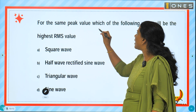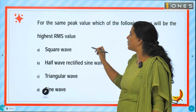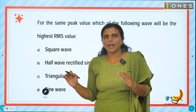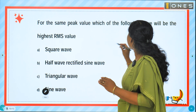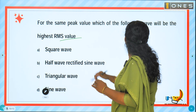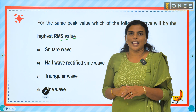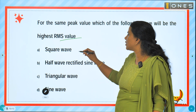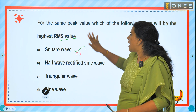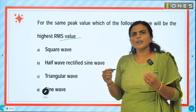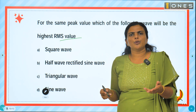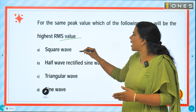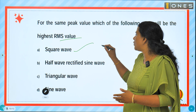For the same peak value, which of the following waves will have the highest RMS value? The RMS value is highest for the square wave, since its RMS equals Vm — compared to Vm/2 for half wave rectifier and Vm/√2 for full wave.